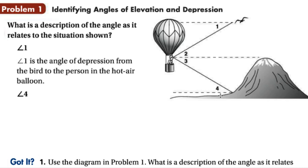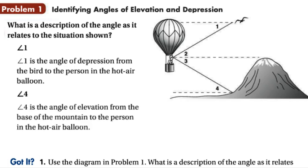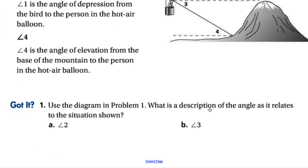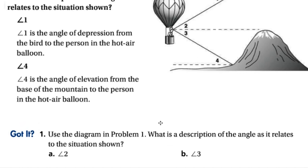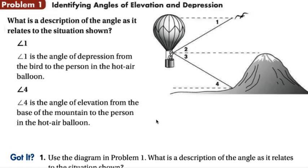What about angle four? Angle four — the horizontal is the ground level or the base of the mountain, and that might be somebody looking up at the hot air balloon. So that would be an angle of elevation because it's above the horizontal. Angle four is an angle of elevation from the base of the mountain to the person in the hot air balloon. Go ahead and figure out what angle two and three might be with a description — not just whether they're elevation or depression, but describe those.